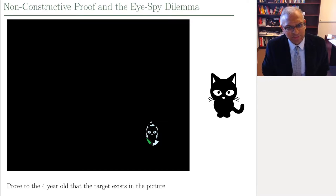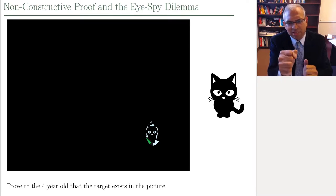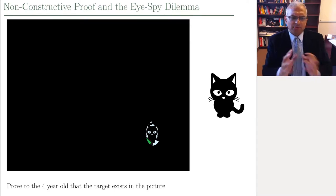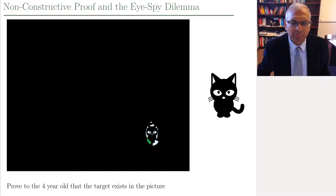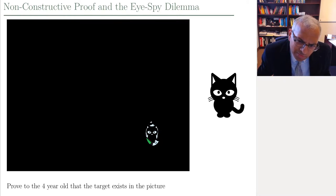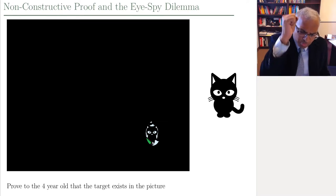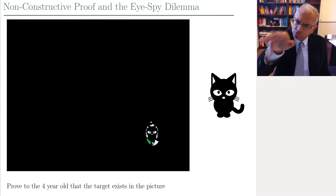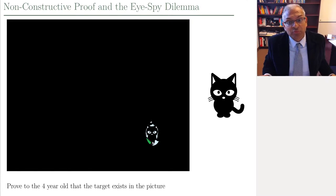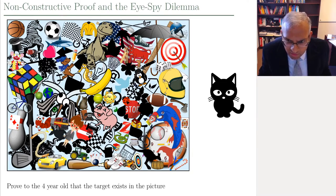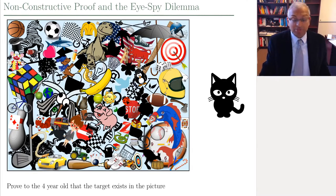Do you believe me? A black cat exists in this picture. I've taken this x-ray lens on top of this black cloth and put it right on top of the cat, and I'm now showing you that the cat exists. But the four-year-old has got the better of me, because I've not only revealed the cat, but I've revealed some hints about things surrounding the cat. I really need an x-ray lens that's exactly the shape and size of the cat, so I can just put it on top and say, look, the cat's there, without showing you anything else. That's a non-constructive proof — now you can go back and try to find the cat, but you can't, because I've given you a non-constructive proof that doesn't tell you where the cat is.